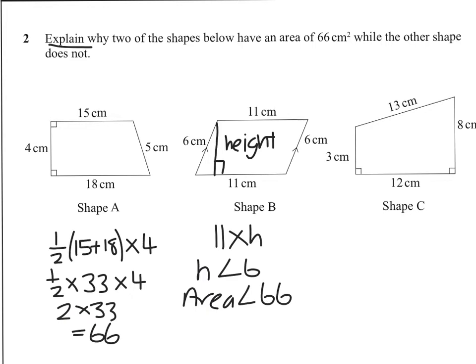The last shape is a trapezium, so half the sum of the parallel sides times the distance between: one half times 11 times 12. Half of 12 is 6, 6 elevenths are 66. So we've explained why two shapes have an area of 66, while the other does not.